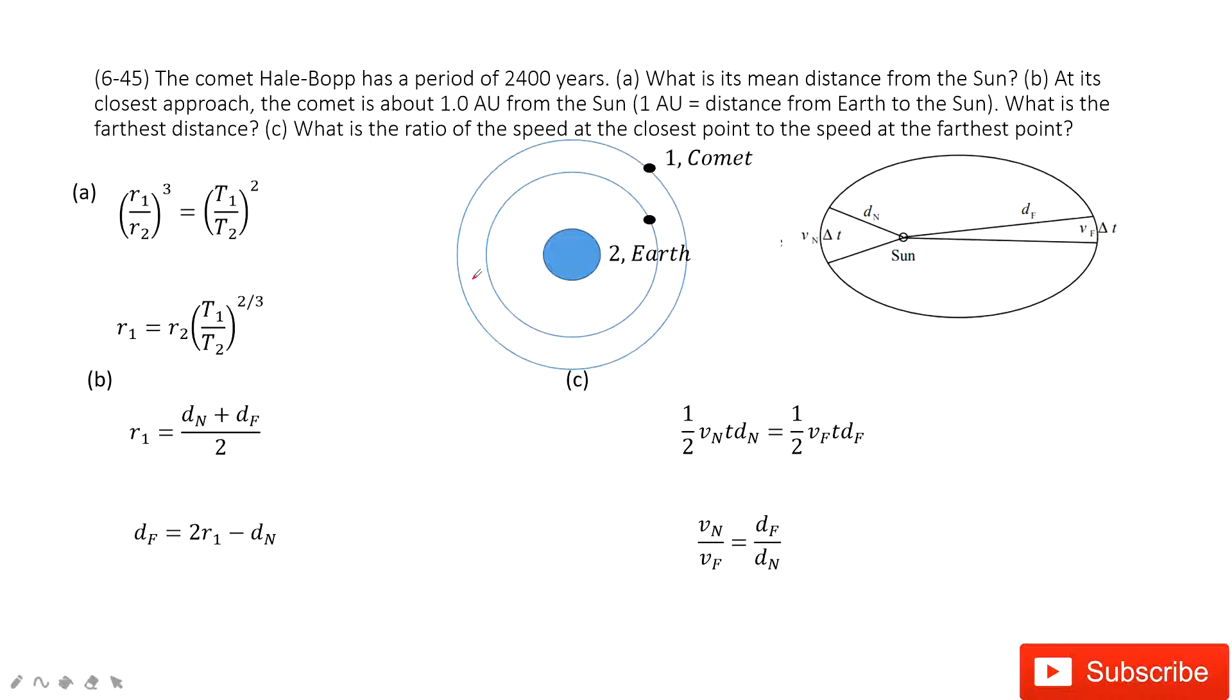At first, we talk about the very typical model of circular motion with the comet and the Earth, and then ask you for the mean distance from the Sun. In this model, we consider it's just a perfect circle motion, and we can consider Kepler's third law.